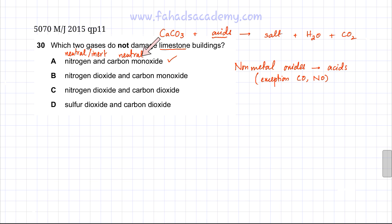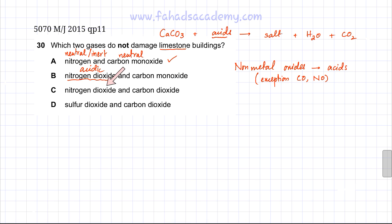Looking at the other options: in option B, nitrogen dioxide will react because it is acidic — NO₂ is acidic. In option C, you have carbon dioxide and nitrogen dioxide — both of these gases are acidic. Carbon dioxide produces carbonic acid when dissolved in water.